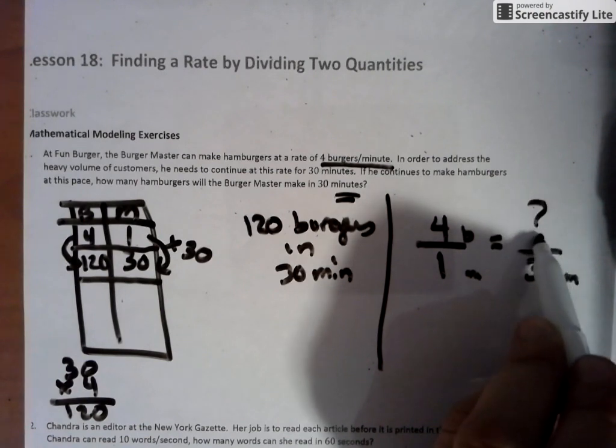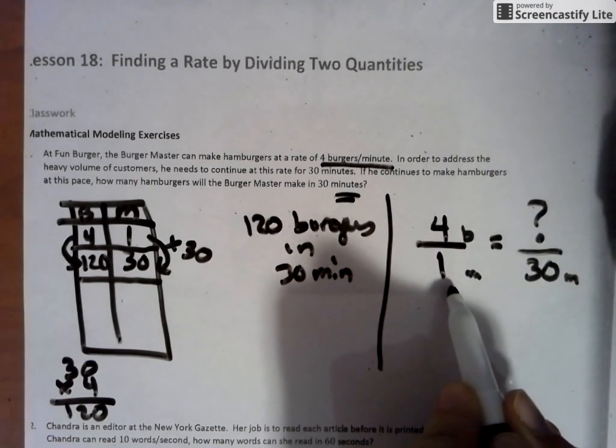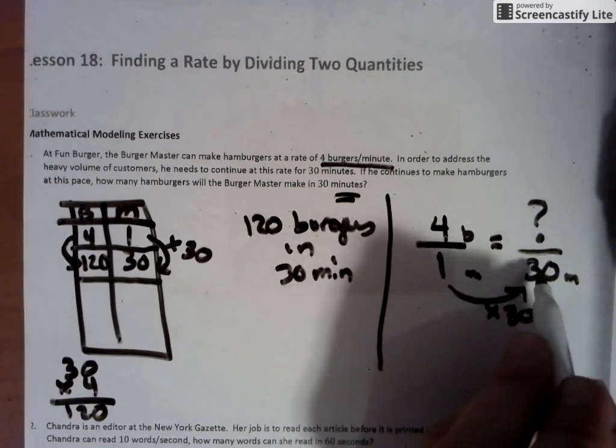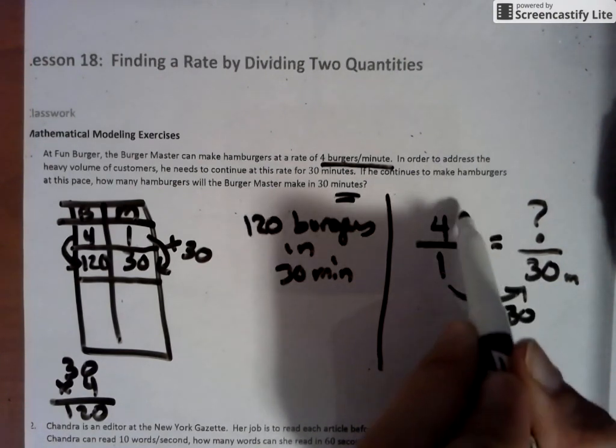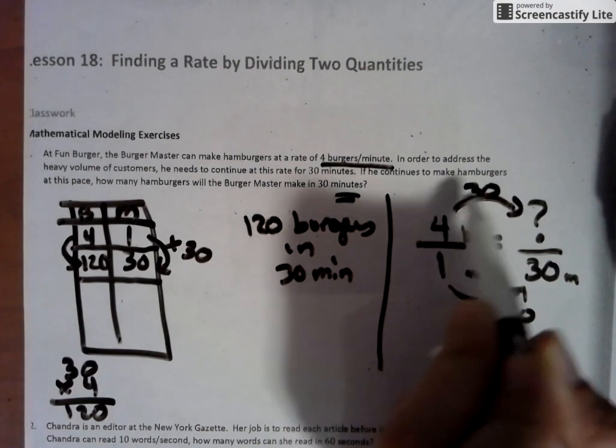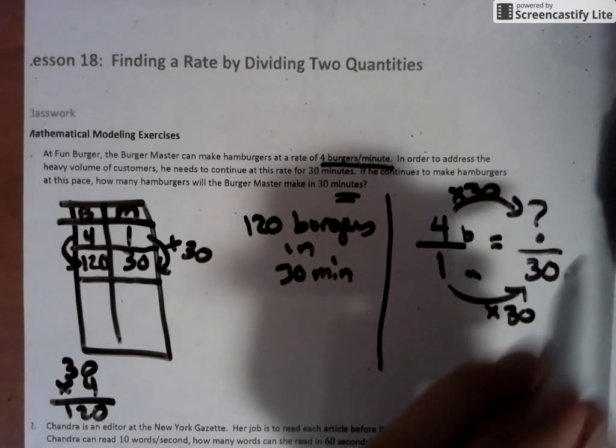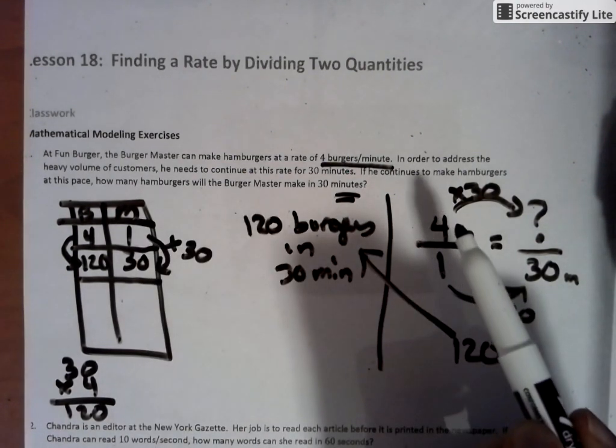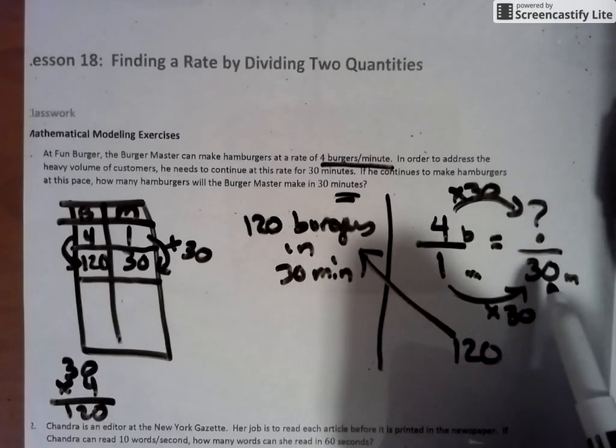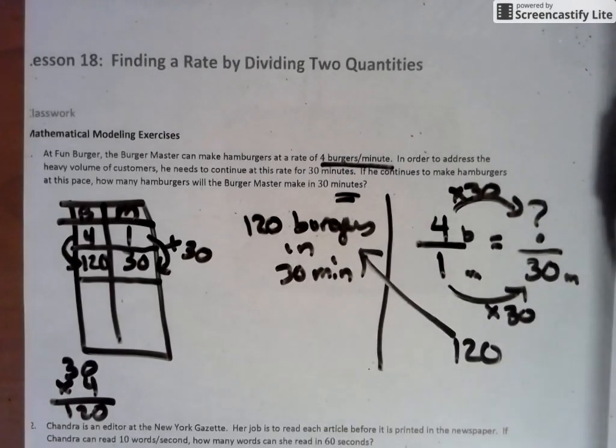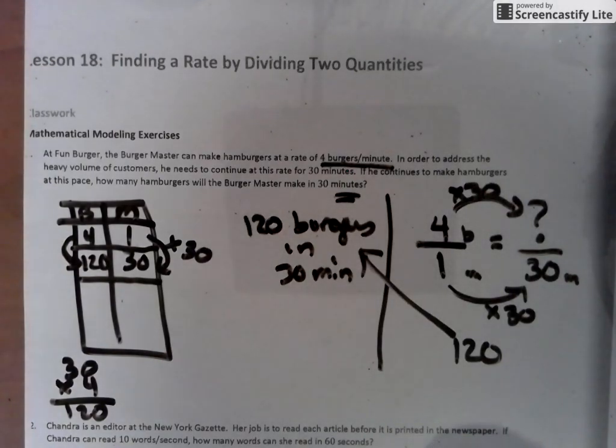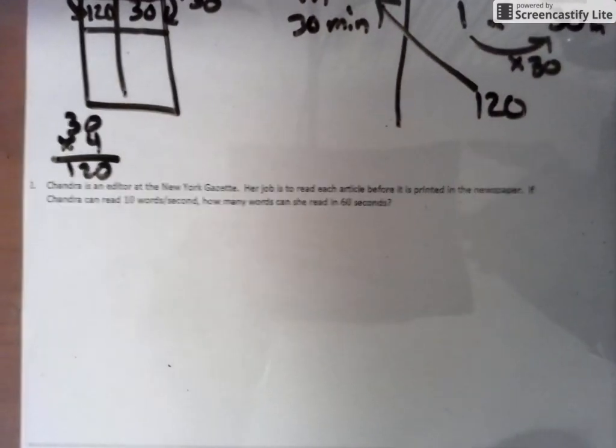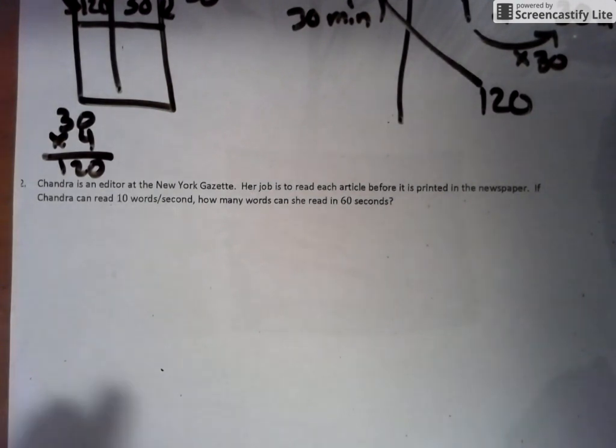The other piece of information we were given was 30 minutes, which means burgers over minutes. We were given 30 minutes. So we don't have this value up here. But if you can see, how do we get from a one to a 30, we would times by 30. Whatever we do to this denominator, we can do to the numerator. So if we do that to the numerator, four times 30 gives us the 120 that we got right here. Same answer, just showing how you go from four times 30 gets this. Whatever you do to the denominator, you do the numerator. And that's one way of looking at it.